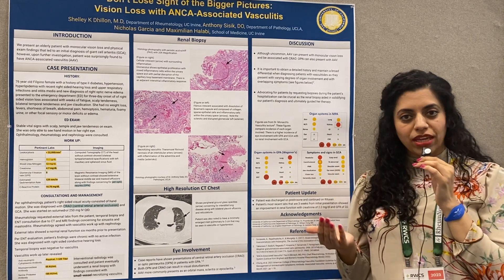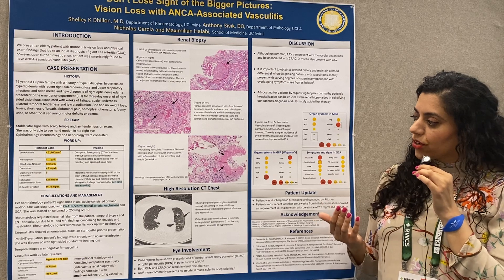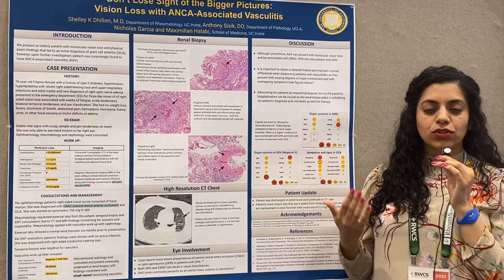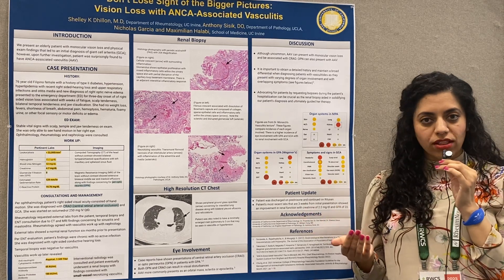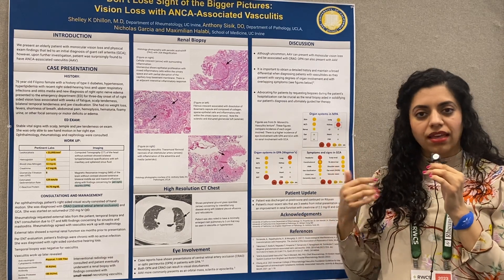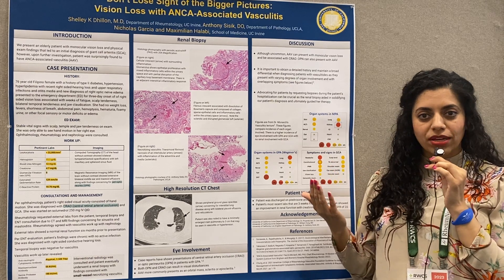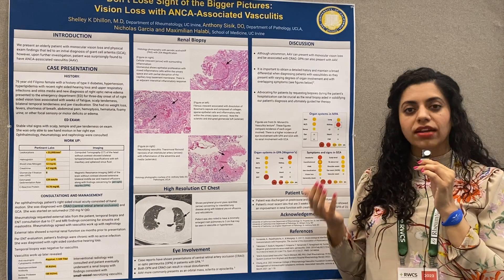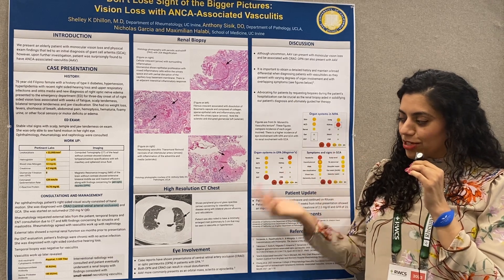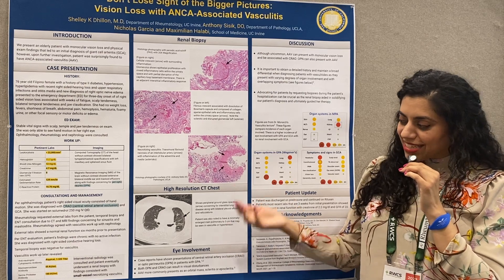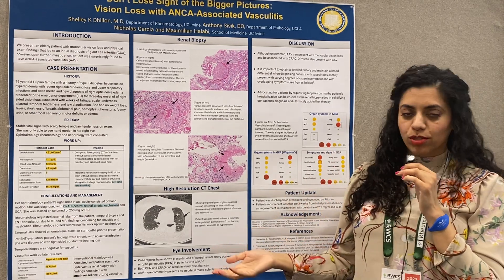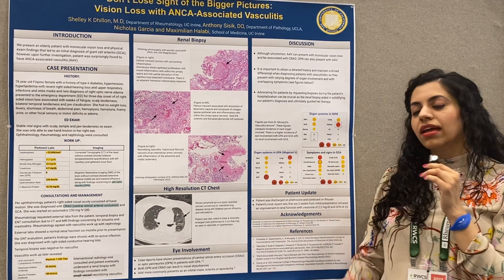When our Rheumatology team saw the patient, we asked questions about her history of chronic kidney disease. After the patient obtained external records showing normal renal function, we agreed with the Nephrology team to further work up the patient for vasculitis. The temporal biopsy was found to be negative for GCA. The subsequent renal biopsy showed active vasculitis, with labs supporting the diagnosis via a positive ANCA and PR3.